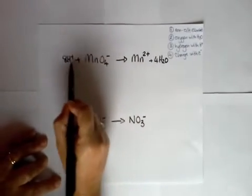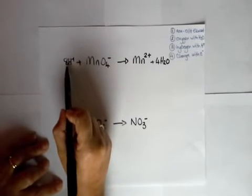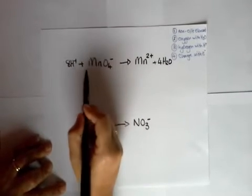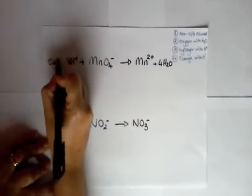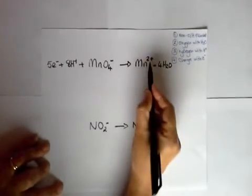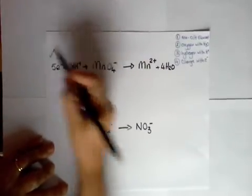We look at the overall charge this side which at the moment is the eight plus minus one so it's seven plus. So we will need five electrons to bring that down to the two plus charge. That's now balanced.